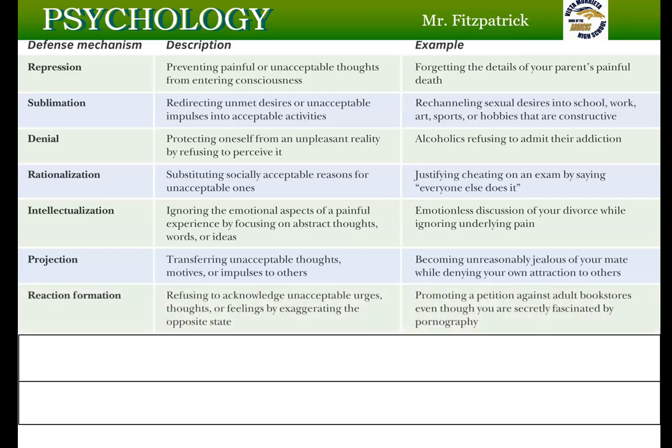Next is reaction formation — when you have unacceptable urges and in your behavior you do something in the completely opposite direction. For example, you engage in pornography and feel bad about it, so you go out in the neighborhood getting petitions signed to close down the adult bookstore.